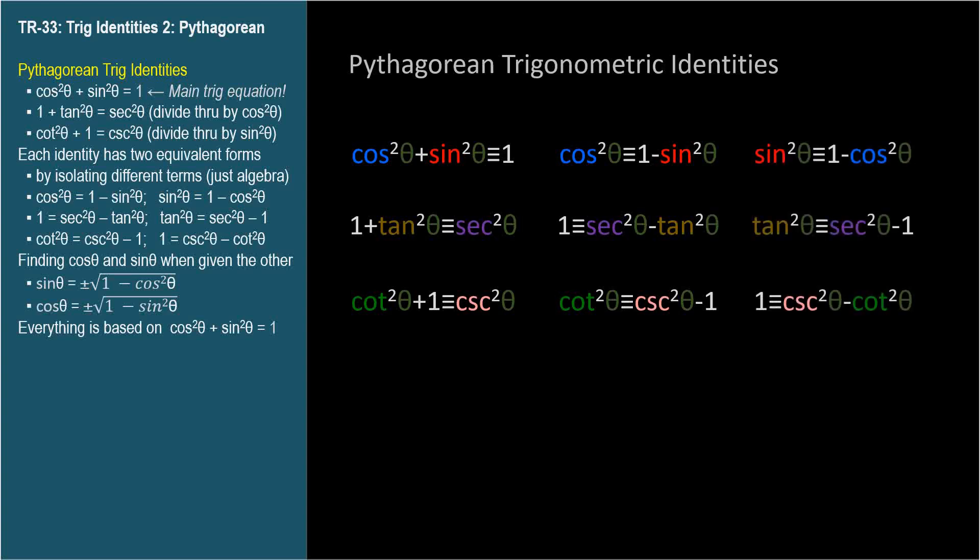A question in video TR-33x will be to state all variations of the Pythagorean identities, and the answer is on your screen. So pause if you like to see if you can generate them. Memorize 1, generate 8.